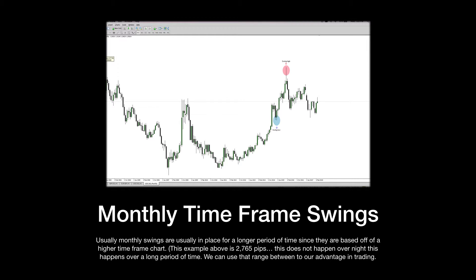The swing high and swing low I've just outlined are shown here on a monthly chart. Whenever a swing high or swing low forms on a monthly chart, it's usually in place for a significant amount of time, mainly because they're establishing that level on a monthly time frame, and when price moves away from it, it's going to take some time to get back.